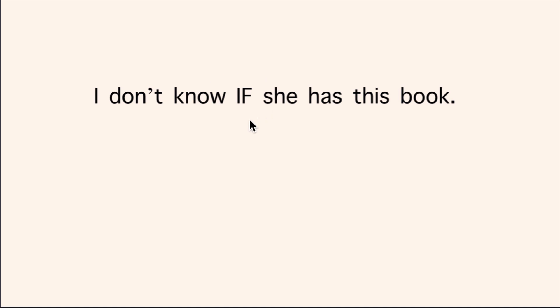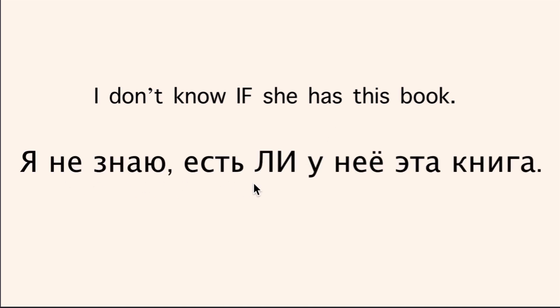Again, I can replace 'if' with 'whether': 'I'd like to know whether she has this book.' The second thing to think about is what is going to be the first element in the subordinate clause. У нее есть эта книга? So in Russian: Я не знаю, есть ли у нее эта книга? Imagine I'm asking you: у нее есть эта книга? And you want to respond: 'I don't know whether she has this book' — Я не знаю, есть ли у нее эта книга?